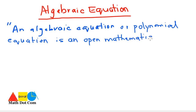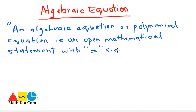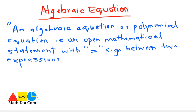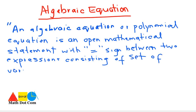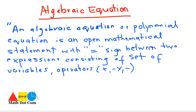It is an open mathematical statement with an equality sign between two algebraic expressions, consisting of a set of variables, operators — plus, minus, multiply, division — and constants.